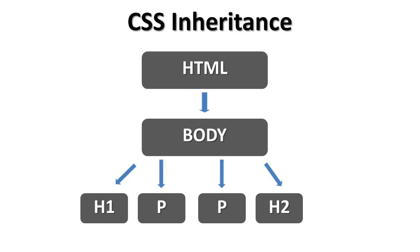The way inheritance works is that if we style against the body element, all the child elements under the parent element inherit those styles. The parent element here is the body element, and the child elements are all the elements below it.